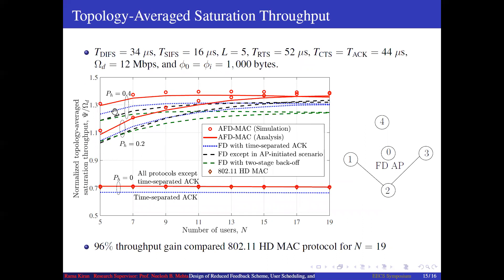Here we have plotted the saturation throughput of the proposed protocol versus the number of users in the cell. These are topology-averaged results. In each topology, two users are connected with probability 1 minus pH, and they are hidden from each other with probability pH. We compare the proposed protocol and different variants of the proposed AFD-MAC protocol against protocols available in the literature, as well as the 802.11 MAC protocol. The proposed protocol outperforms all compared protocols, improving the spectral throughput achievable with 802.11 depending on the number of hidden nodes.